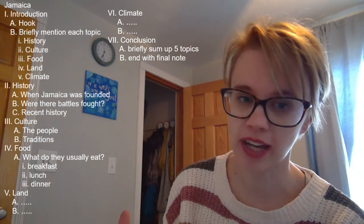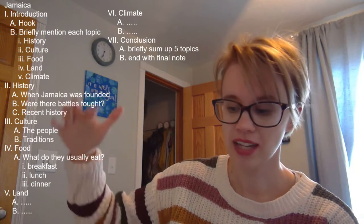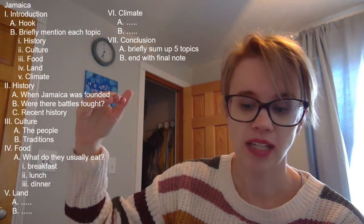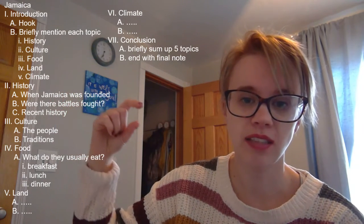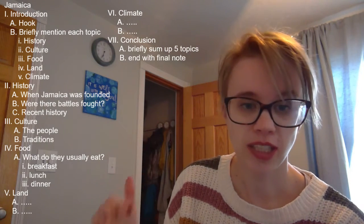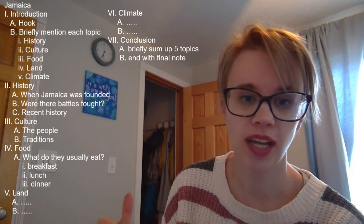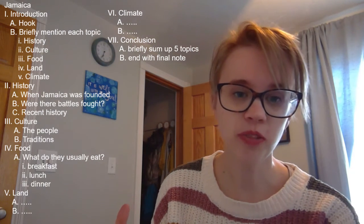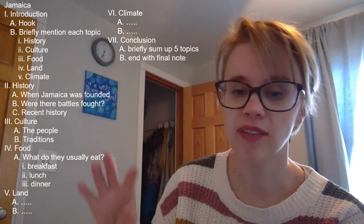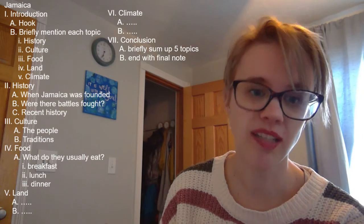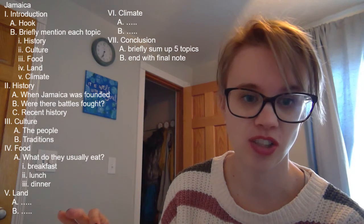Then I continue my outline for the rest of the paper, as you can see listed here. I start with history and decide what I want to talk about within the history of the country. My next topic is culture, a natural transition from history. I show what I would be talking about under culture, and I do that for each of my topics all the way to the conclusion. In the conclusion, you want to restate your topics briefly with regard to your animal or country, and then have a closing statement. Remember, a conclusion is not a place to introduce new material, so please make sure you are not doing that.